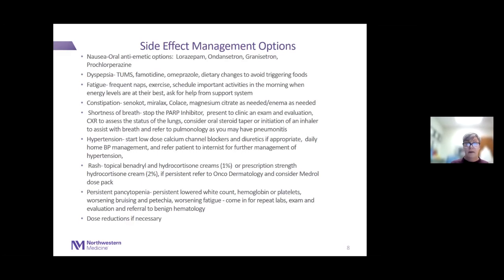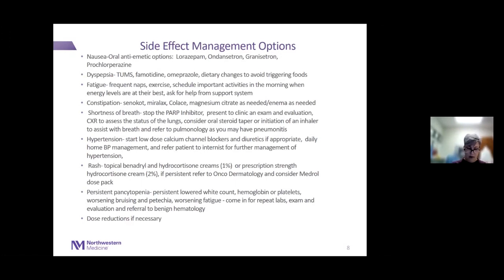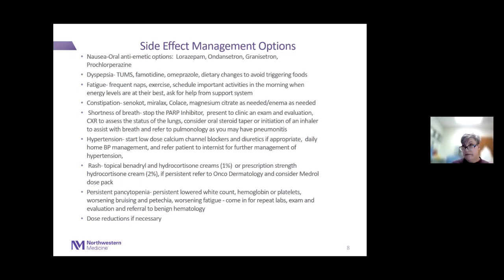Persistent pancytopenia is continuously lowered white count, red count, and platelets. Patients often report excessive fatigue, shortness of breath, weakness, easy bruising, or petechiae—purple patches with red dots indicating platelets aren't working well. Call the office if you experience these symptoms. If counts are low, we'll hold your PARP inhibitor and test labs weekly until they normalize. If they don't normalize after four to six weeks, we'll refer you to hematology to rule out myelodysplastic syndrome.